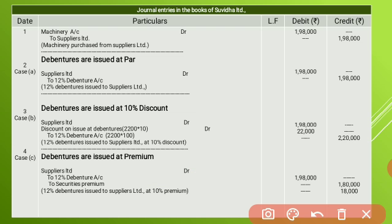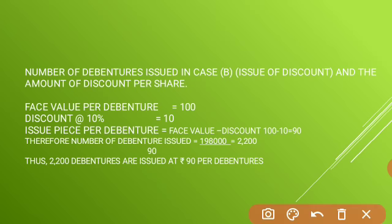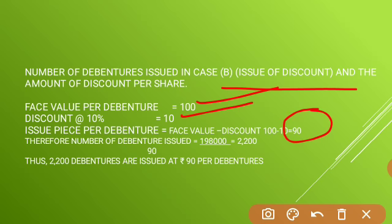The second condition is debentures issued at 10% discount. The journal entry for the discount is: Suppliers Account Dr., Discount on Issue of Debentures Account Dr., to 12% Debentures Account. We need to show a working note for this. The face value of a debenture is 100 rupees. With a 10% discount, the discount amount is 10 rupees. So the issue value of a debenture is 100 minus 10 equals 90 rupees.